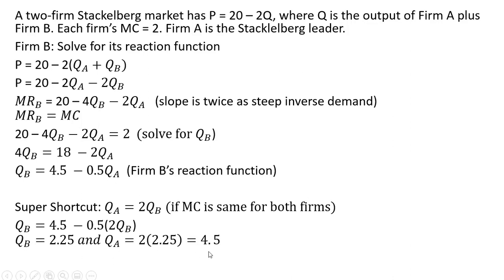Firm A will produce twice as much or 4.5 units and the price at these output levels is $6.50 per unit.